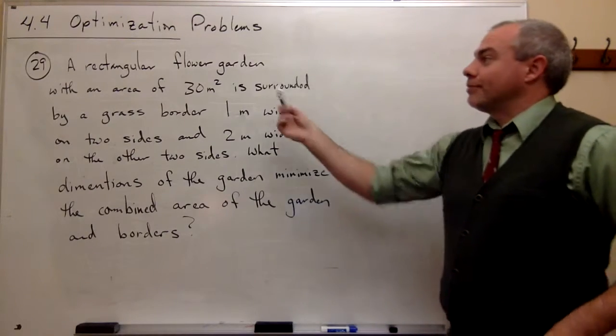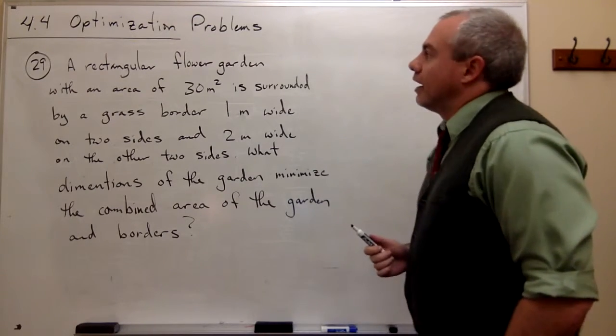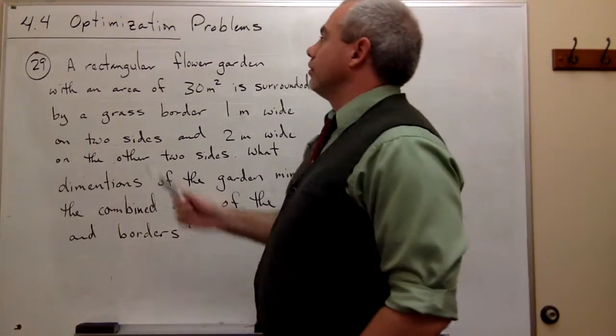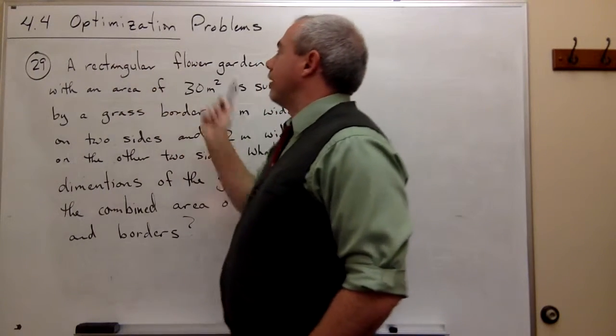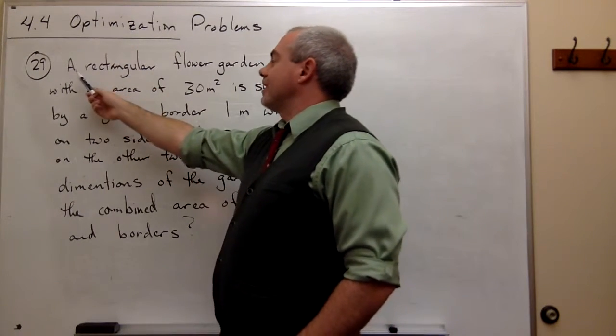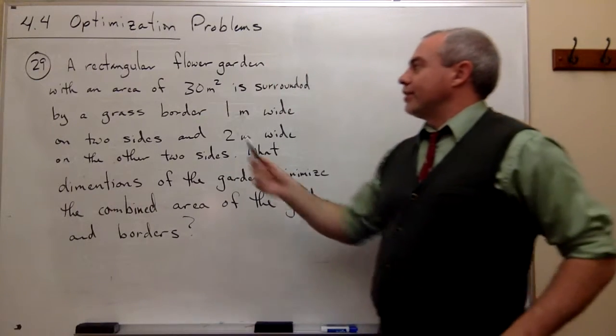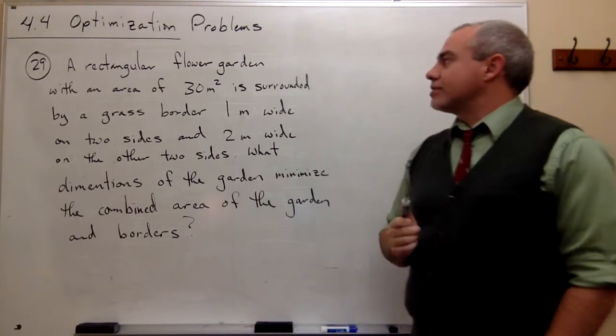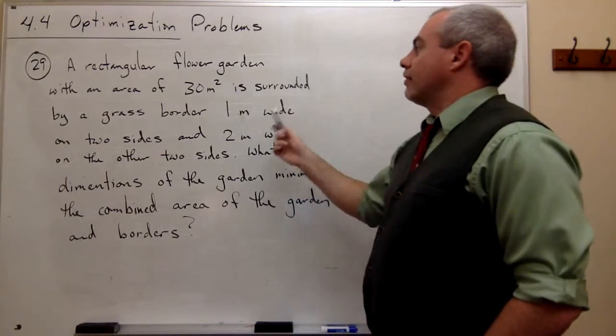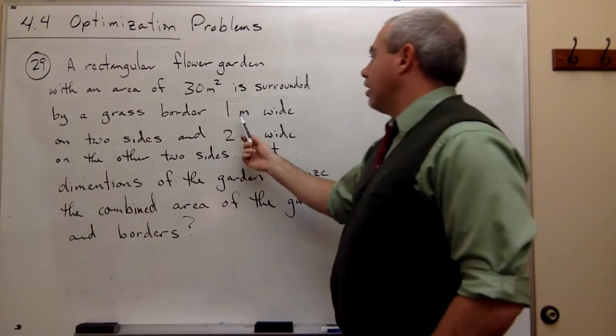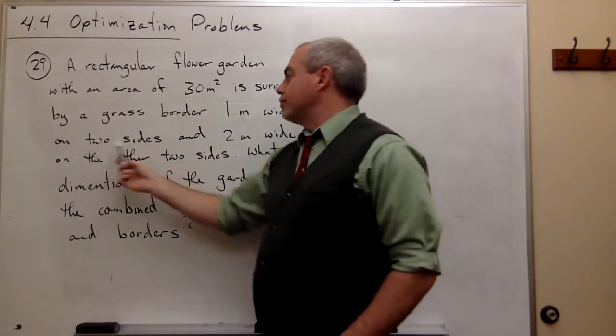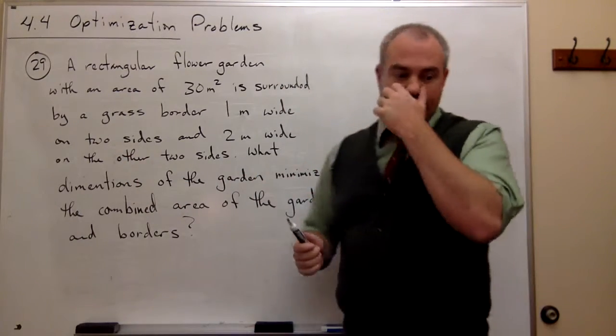All right, let's look at problem number 29. In problem number 29, we want to look at an optimization problem. The optimization problem is: a rectangular flower garden with an area of 30 meters squared is surrounded by a grass border 1 meter wide on two sides and 2 meters wide on the other two sides.